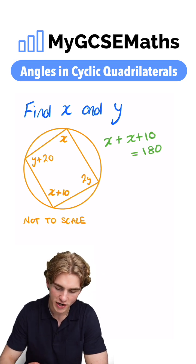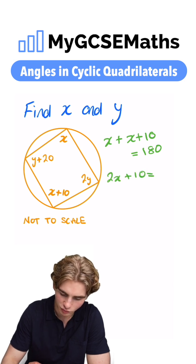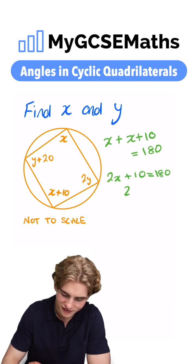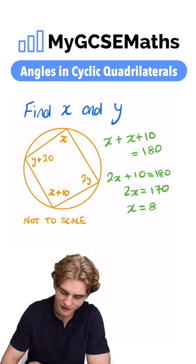This is actually an equation which we can solve. x plus x is 2x, so we have 2x plus 10 equals 180. We can take 10 from both sides. 2x equals 170, and then we can divide both sides by 2. We're going to get x equals 85.